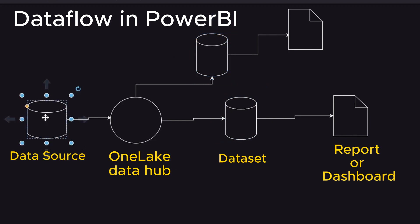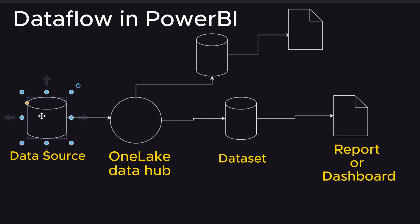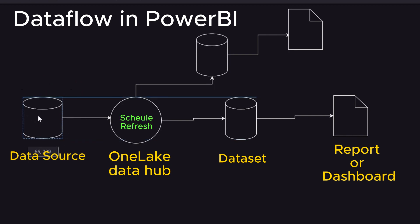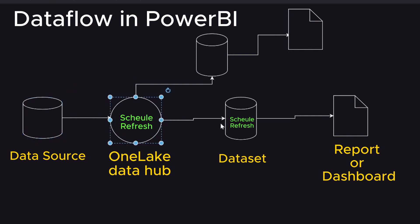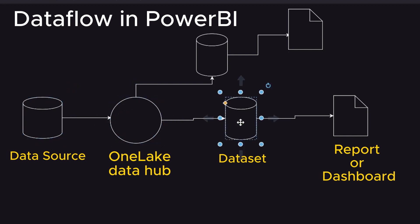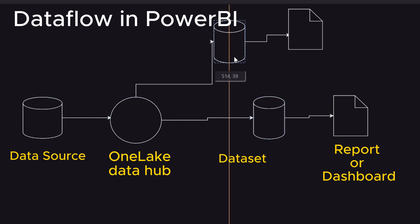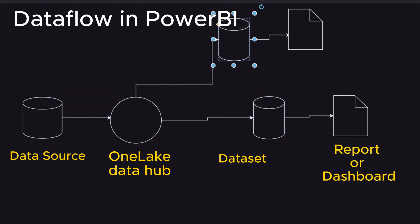To give you an example, suppose you are fetching raw data from Google Analytics, which is related to your website. So Google Analytics is where the raw data is stored, and through the data flow you fetch this data, transform it, load it, and based on this data you create the dataset.